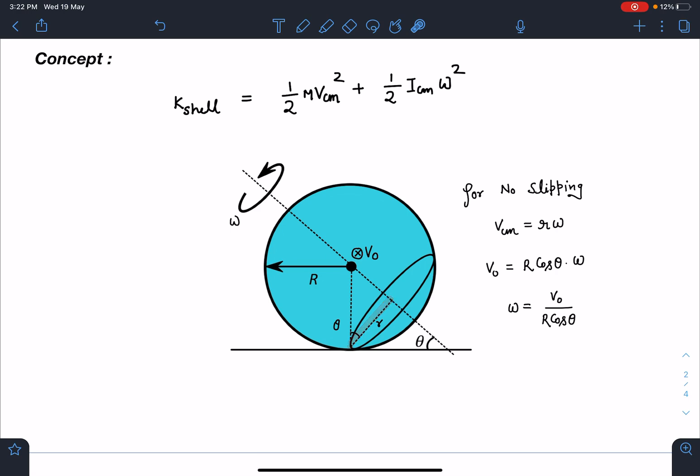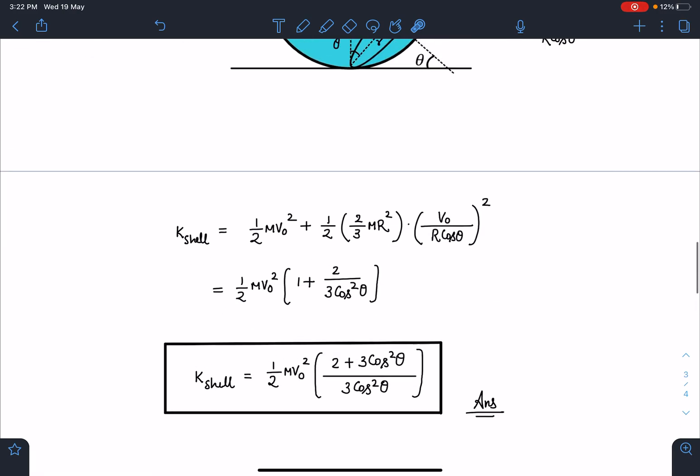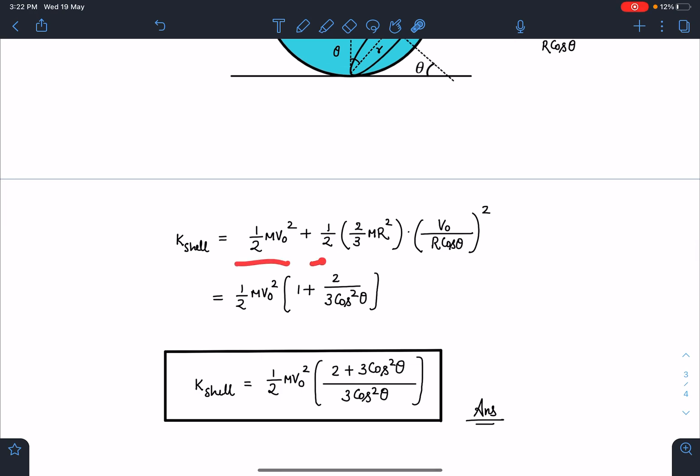So v₀ = R·cos(θ)·ω, which gives us omega. After that, it's simple to apply K_shell = ½Mv²_cm + ½I_cm·ω². The moment of inertia of the shell is (2/3)MR², times ω².